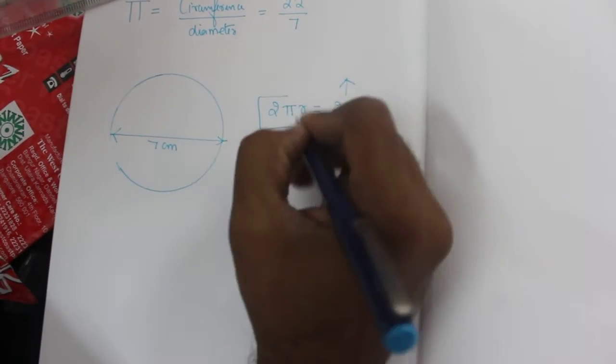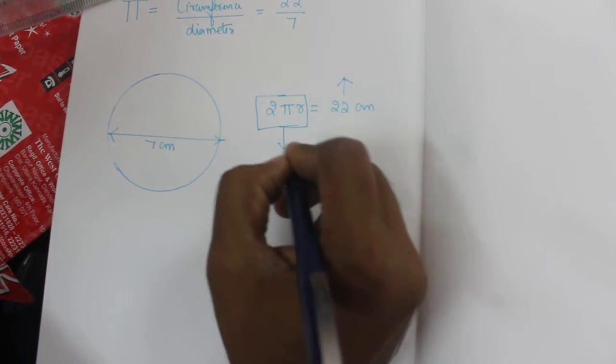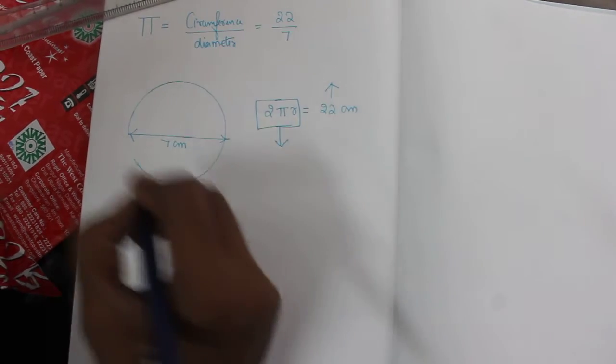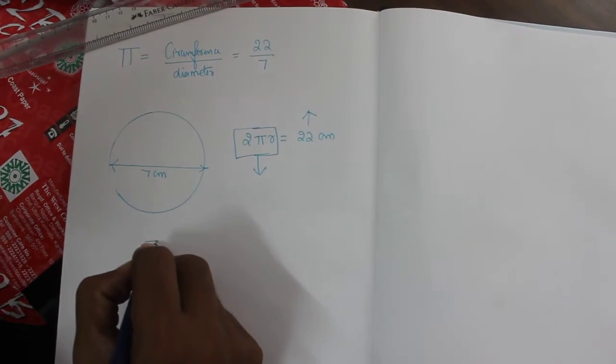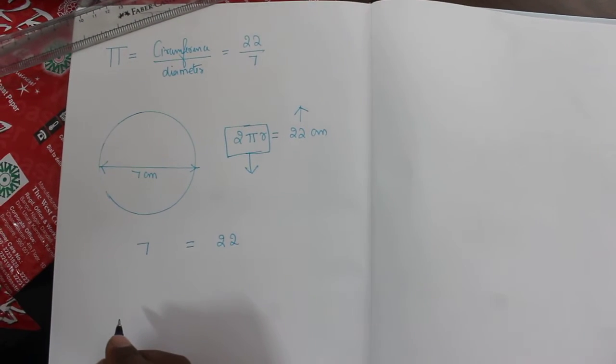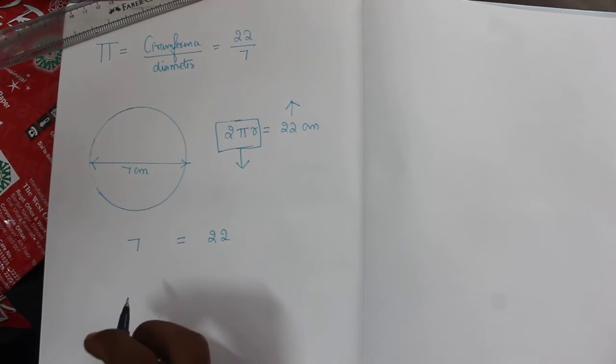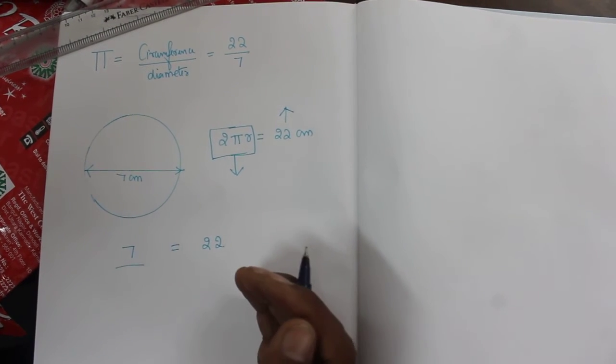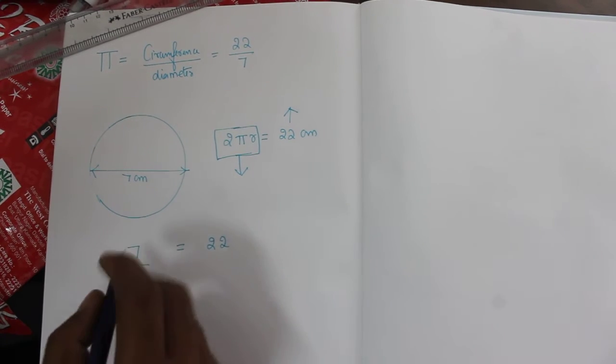Now, how do we get the formula 2 pi r? You all know the pi value. If you have 7 cm diameter, the circumference of the circle will be 22. Now, if I want the circumference of a circle with diameter 5 cm.